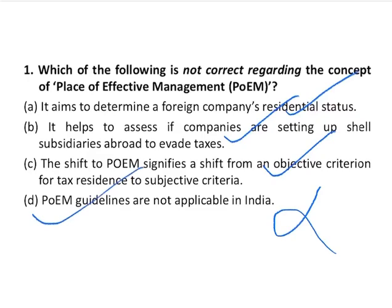POEM guidelines became applicable in India from the year 2016-17. Since we have to choose the incorrect statement, the correct answer is option D. POEM is aimed at ensuring sufficient economic activity takes place in a particular country and determining a foreign company's residential status. It has been defined as the place where key management and commercial decisions necessary for the conduct of business of an entity as a whole are, in substance, made.